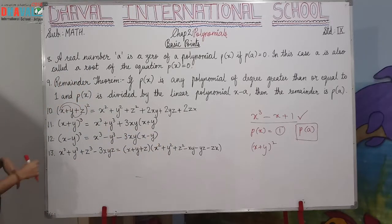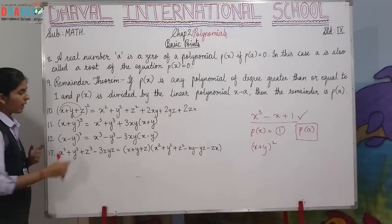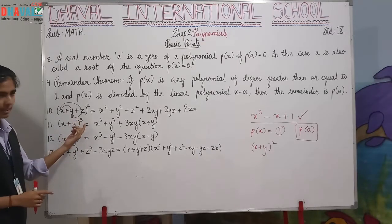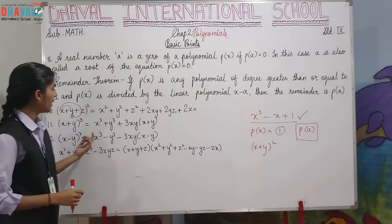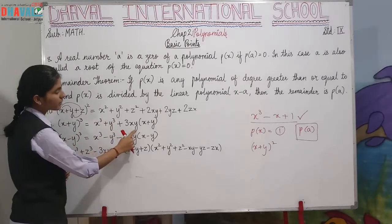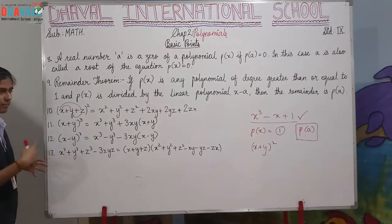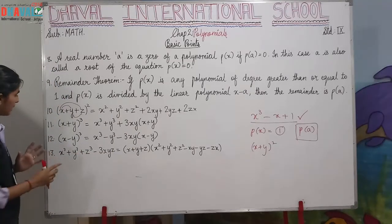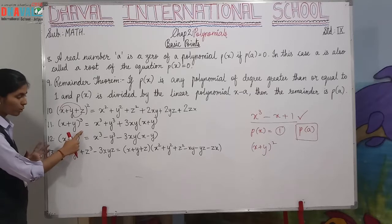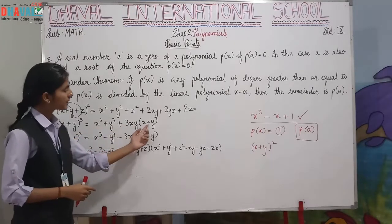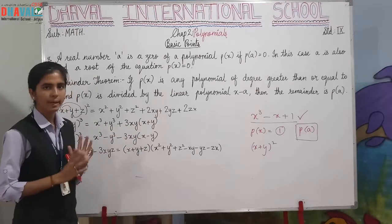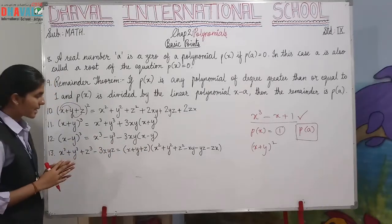Then we have (x+y) whole cube. The formula is x cube plus y cube plus 3xy into (x+y). And if vice versa, (x-y) whole cube, where there is plus sign, we will give minus sign. The formula will remain the same.